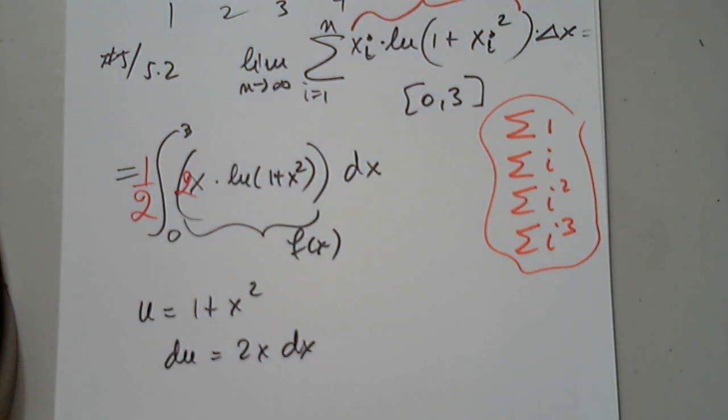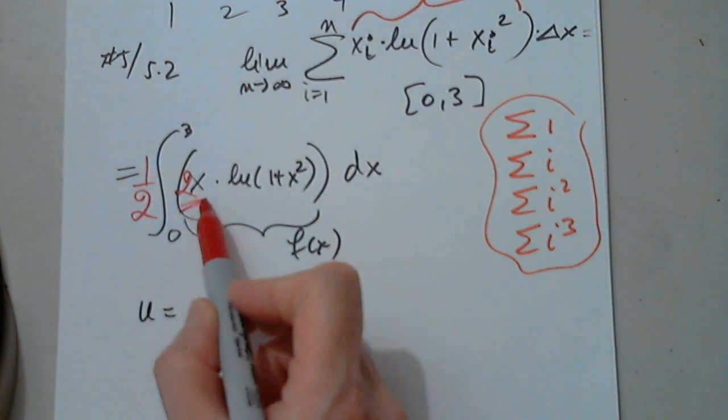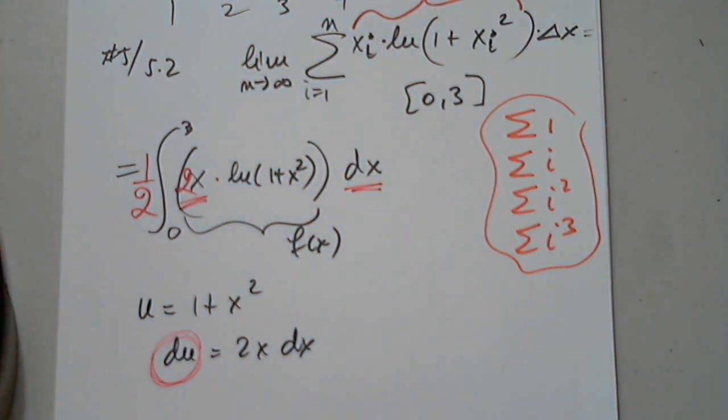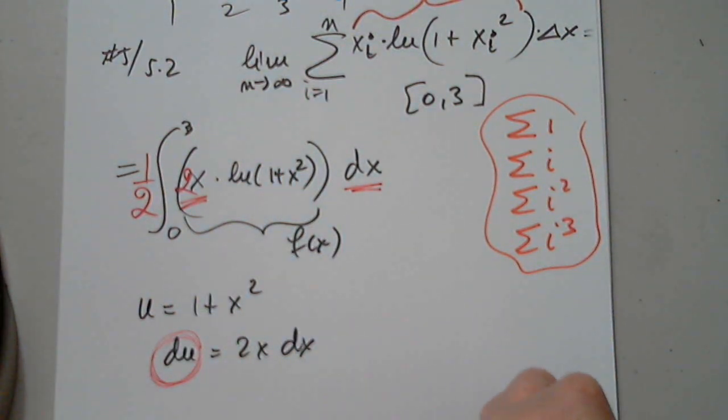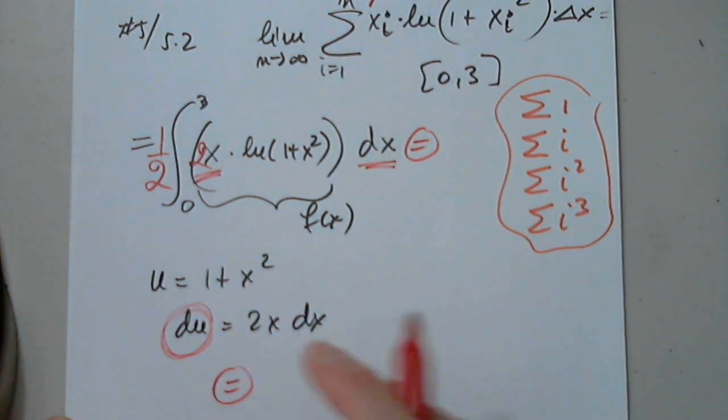Multiplying by two and dividing by two never hurt anyone, so then I have the 2x with dx, and then I have natural log of this, and I will have to stop because we don't know integration by parts.